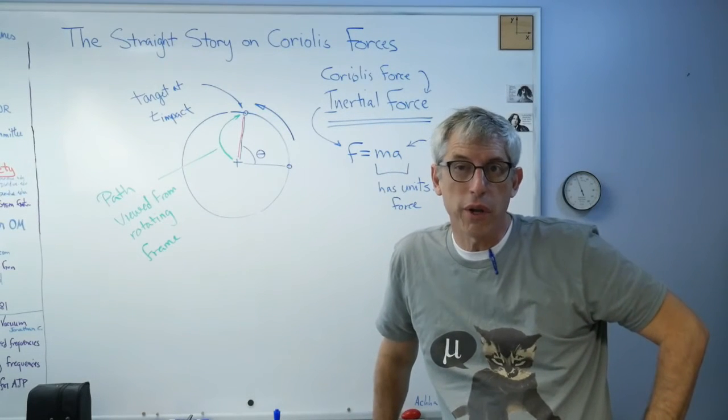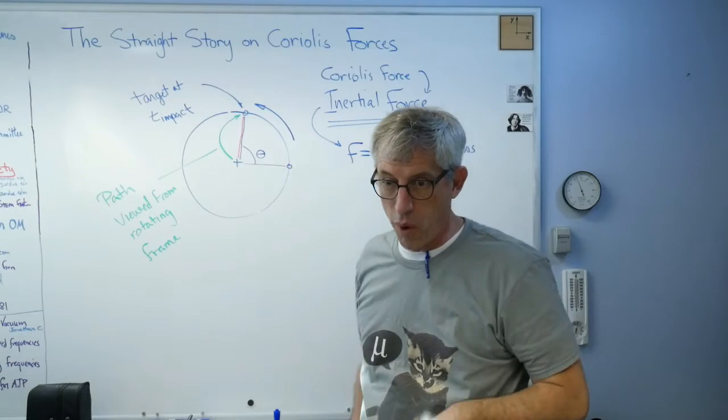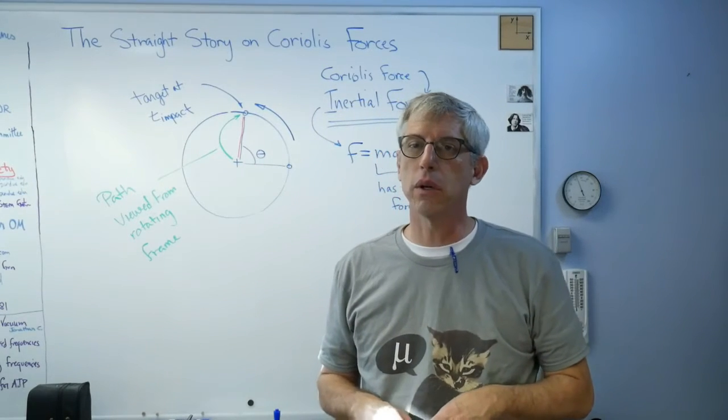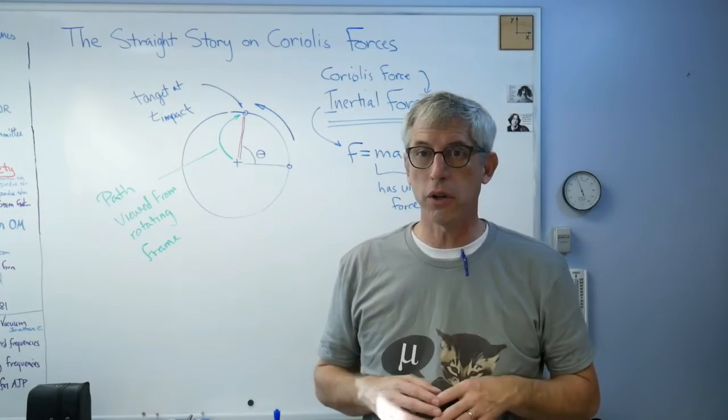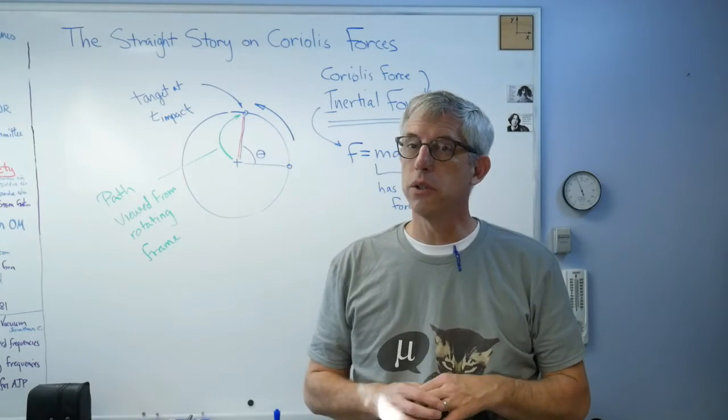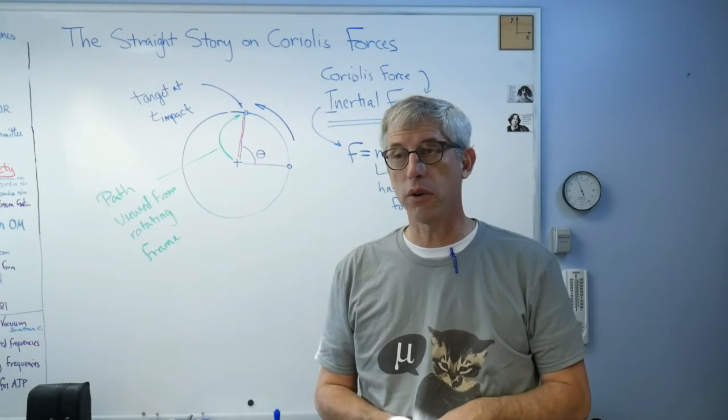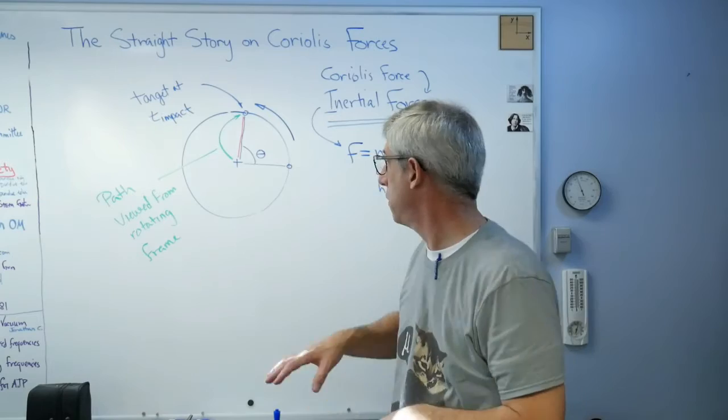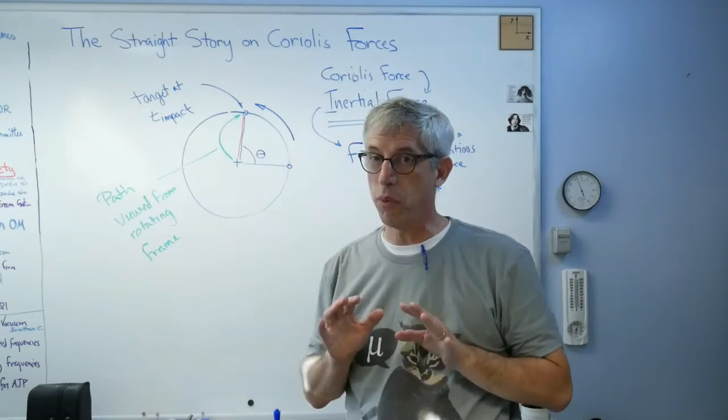Now if you want to know where Coriolis motion comes from, the Coriolis effect comes from, and you want it in mathematical terms, it's the result of a vector cross product. So if you go ahead and do the math as a vector cross product, this kind of behavior is going to drop right out of that mathematical description.